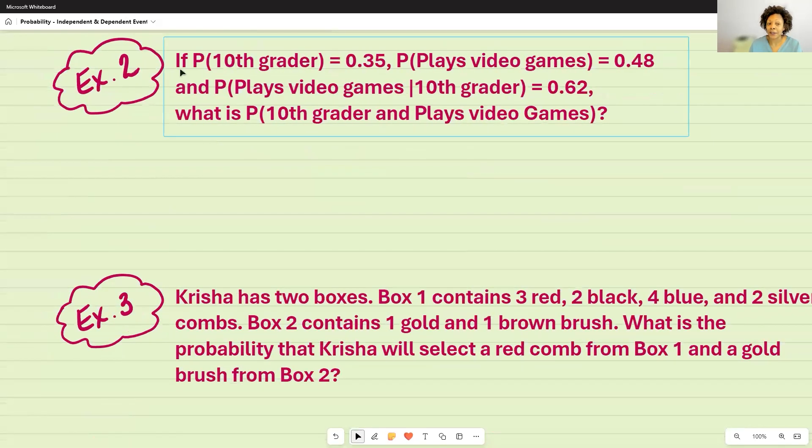For example two, if, I'm giving that word, so if or given means that I'm going to use that conditional probability portion. So therefore, this is going to be dependent. So if the probability of 10th graders is equal to 0.35, the probability of anyone who plays video games is equal to 0.48, and the probability of someone who plays video games,